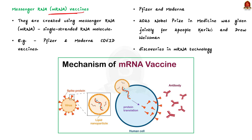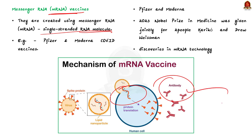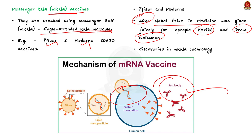In 2023, the Nobel Prize in Medicine was awarded to Karikó and Drew Weissman for their discoveries in mRNA technology used in Pfizer-BioNTech and Moderna vaccines. Viral vector vaccines use a modified version of a different virus as a vector to deliver protection. Several viruses have been used as vectors, including influenza and adenovirus — which is known to cause the common cold and is used in some COVID-19 vaccines. Examples of viral vector vaccines include Sputnik V, Johnson & Johnson, and AstraZeneca.